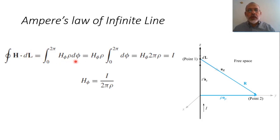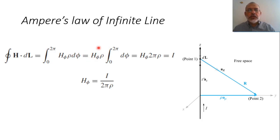The incremental length of the path would be in the phi direction, so it would be ρ dφ, and to be a closed path it would be from 0 to 2π, such that we have a complete circle around the current. As long as the magnetic field is constant and the radius is constant, they can be taken outside the integration. The integration would be from 0 to 2π dφ, or in other words, it is 2πρ multiplied by H_phi, equals the current enclosed by this closed path.